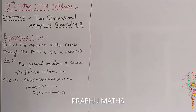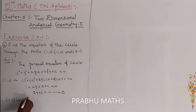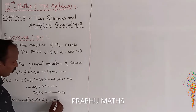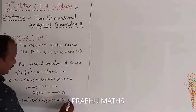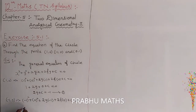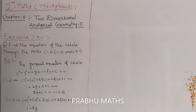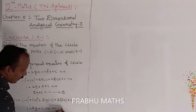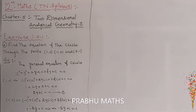Now going to the second equation. The second point is (-1, 0). Substituting: minus 1 squared plus 0 squared plus 2G into minus 1 plus 2F into 0 plus C equals 0. Simplifying: 1 minus 2G plus C equals 0, which implies minus 2G plus C equals minus 1. This is equation number 2.